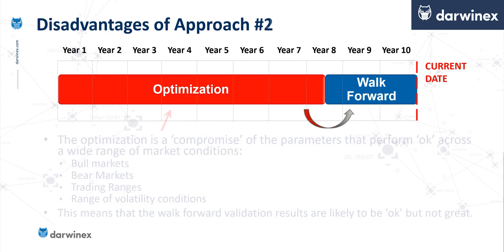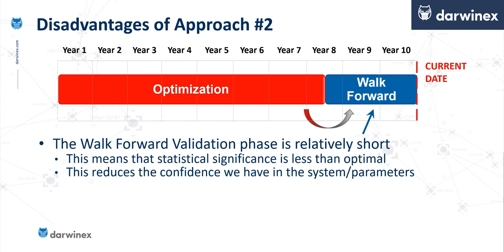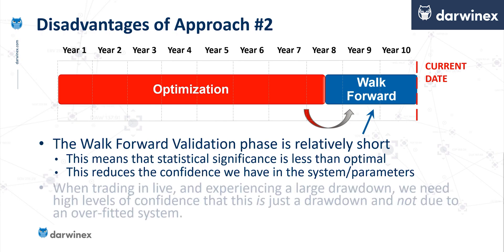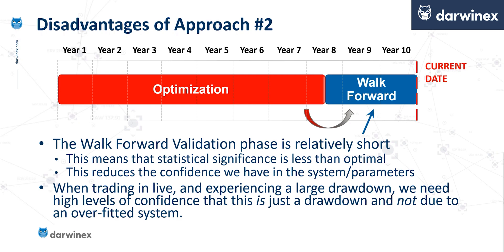Another disadvantage is that the walk-forward validation phase is relatively short, and when it's short it doesn't encompass many trades. When we don't have many trades, the statistical significance is not good. Overall, this has the effect of reducing the confidence we can have in both the system and the parameter values that have come out of the process. This becomes really important when we're trading in our live account, because if we experience a large drawdown, we need to have the confidence that this is just a drawdown and not due to a failing system which has been overfitted.